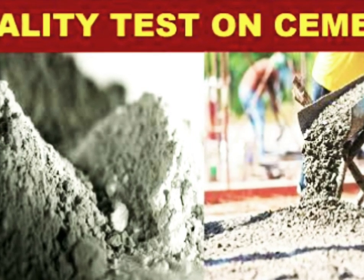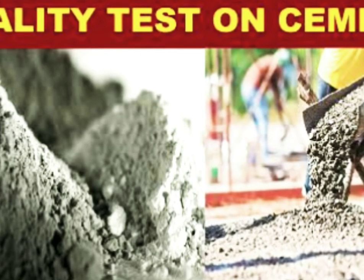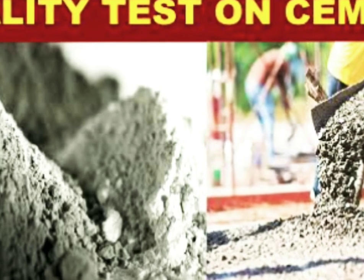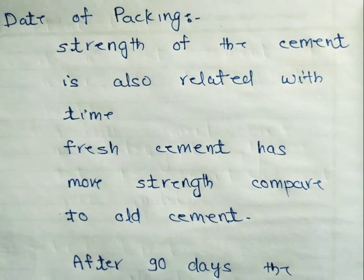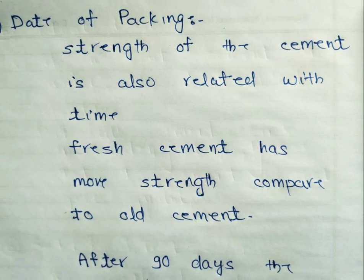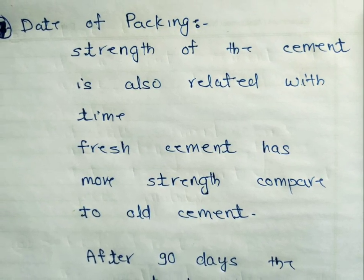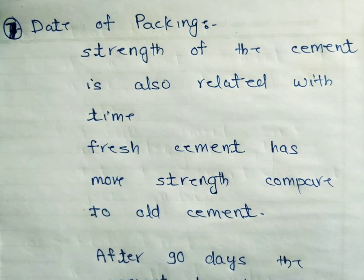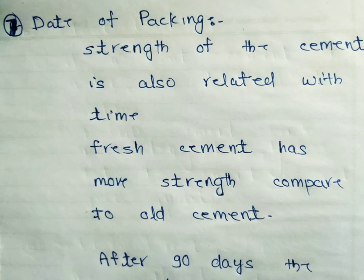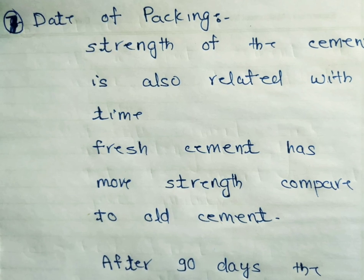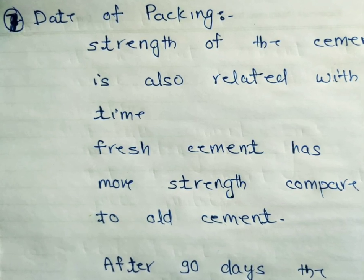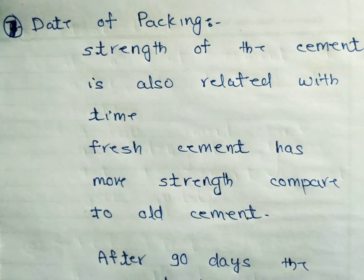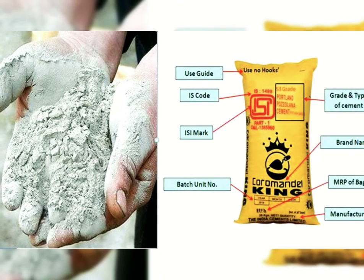The sixth test is the setting test. A paste of water and cement is made on a plate. This paste is kept under water for 24 hours. After 24 hours, we check if it has cracks. If there are cracks, the cement is rejectable. If there are no cracks, it shows the cement has good quality.